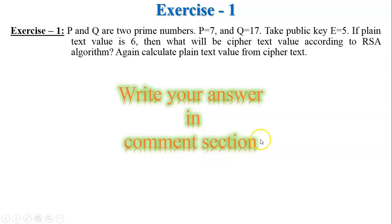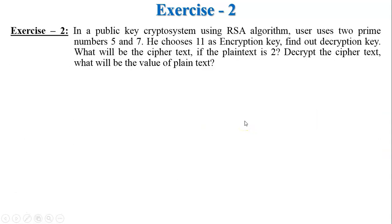Write your answer in the comment section. Exercise number two: in a public key cryptosystem using RSA, a user uses two prime numbers p equals 5 and q equals 7. He chooses 11 as the encryption key, so e equals 11. Find the decryption key, the ciphertext if the plaintext is 2, and then decrypt the ciphertext to find the plaintext.